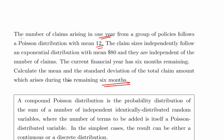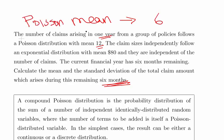What we're given is a specification for the Poisson distribution for one year, but we're dealing with six months. So essentially the Poisson mean becomes six, because we're dealing with six months not one year. If it's one year the mean is 12; if it's six months it is six.